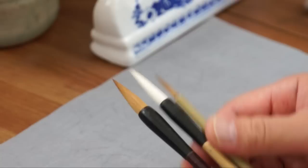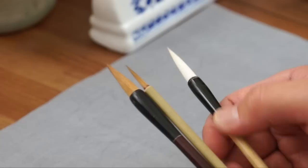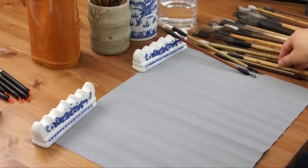The third one is a wolf hair brush. Actually, it is also made of weasel hair, same as this small one. It is bigger. It is good for painting orchids, blades and bamboo leaves.